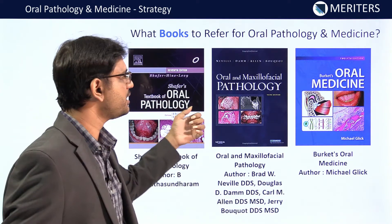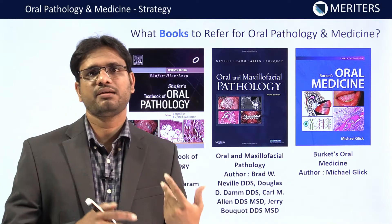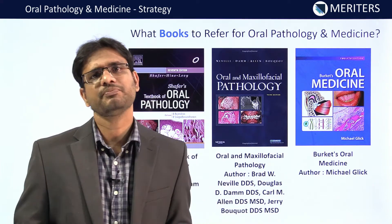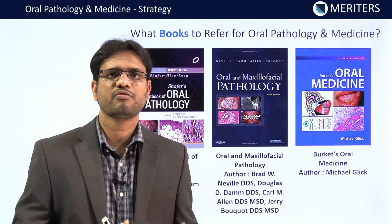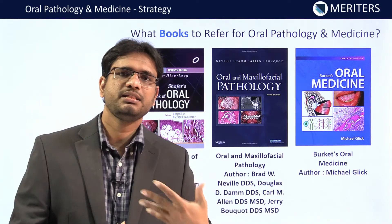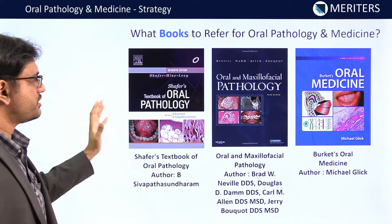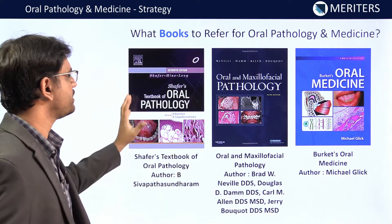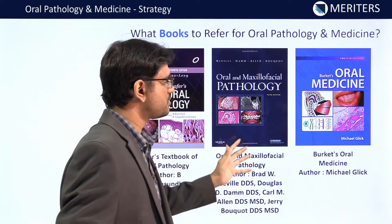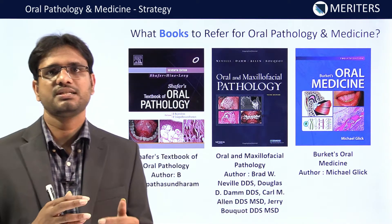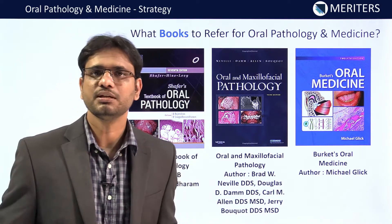Coming to the books for oral pathology: the two very important books are Schaeffer's Oral Pathology and Nevels, and most questions will come from Schaeffer's. Some students ask which edition to follow — after the sixth edition, any edition can be followed: seventh, eighth, or ninth. However, we mainly recommend the seventh edition because a lot of information has been deleted in later editions, and most references can be easily found in the seventh. If you have the eighth, ninth, or tenth edition that is also fine. For Nevels, the third edition is recommended, but if there is any controversy between Nevels and Schaeffer's, always go with Schaeffer's, as Nevels is the secondary book used in Indian examinations.